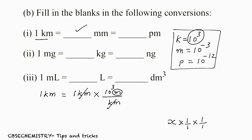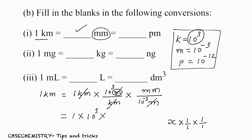Now we are supposed to convert meter to millimeter. Write meter on the denominator and millimeter on the numerator. Milli is 10 raised to minus 3, so write 10 raised to minus 3 on the denominator. The fraction equals 1. Cancel meter and meter. We get 1 × 10³ × 10 raised to minus 3 going up, giving 10 raised to 6. So 1 kilometer equals 10 raised to 6 millimeter.